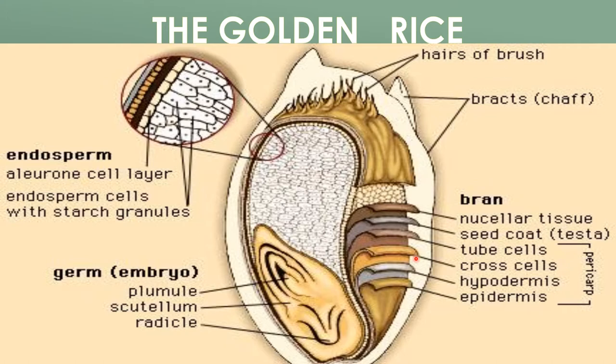Milled rice is usually pro-vitamin A free — that means it does not have much pro-vitamin A. So what is the goal of golden rice? The goal is to produce a mutant rice plant that produces beta-carotene, an organic pigment, specifically pro-vitamin A, in the endosperm — the edible part of the grain.